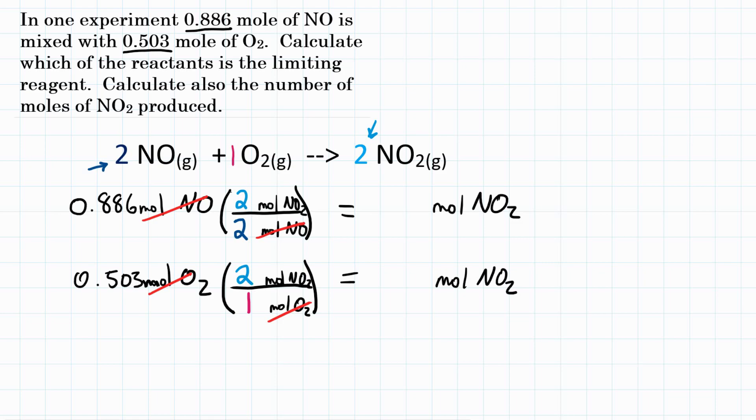So all our units will cancel out. And if we do the math for the top problem, we will have 0.886 times the top of our conversion factor, which is 2, divided by the bottom, which is also 2. And that is going to be exactly what we started with. We're going to have 0.886 moles of NO2 produced. That would be if all of our 0.886 moles of NO reacted.